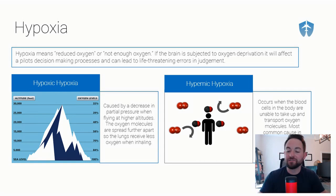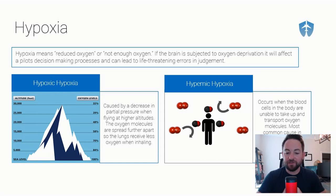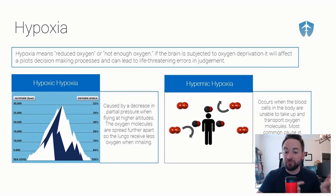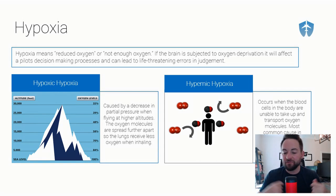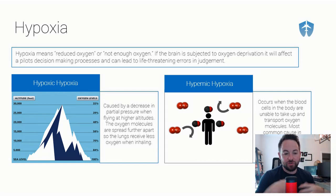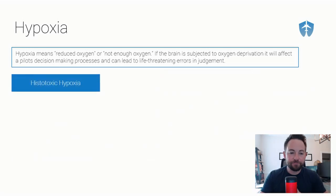Carbon monoxide attaches to blood cells 200 times faster than oxygen. So if you have an exhaust leak in the cockpit — your heater is on, you've got some kind of exhaust shroud leak — you can be getting carbon monoxide poisoning. That carbon monoxide attaches to your blood cells and blocks oxygen from attaching. So even if you're flying at 2,000 feet above sea level with plenty of oxygen molecules around you, they're not attaching to your blood cells because carbon monoxide is taking their spot, and oxygen is not being transported around the body.